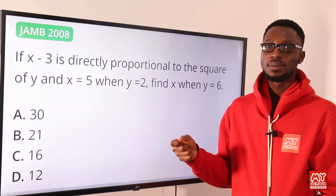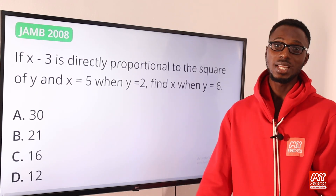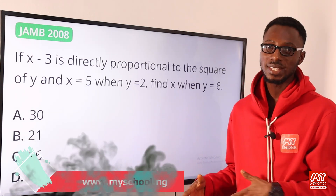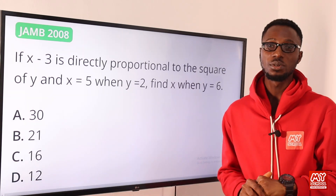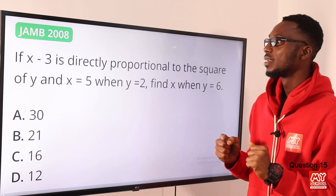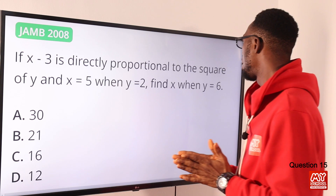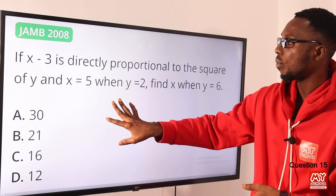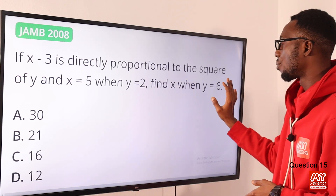Kindly use the link in the description below to ask your questions. Once you click on the link, it gets you to the MySchool website where you can interact with our wonderful solution providers. Question 15: if x minus 3 is directly proportional to the square of y, and x equals 5 when y equals 2, find x when y equals 6.